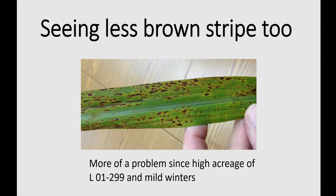Brown stripe is another fungal disease. The lesions are very similar in color to brown rust, but you tend to see more of what we call a halo — a yellow zone around the lesions — and on the underside of the leaf you don't see pustules with spores. There's a variety factor as well. This is becoming more prevalent and obvious, with differences among varieties in susceptibility, and L01-299 is also very susceptible to brown stripe. It's a disease of stressed cane, much more severe when the cane is under nutrient stress, herbicide injury, or adverse weather conditions. When we've had mild winters and the cane is trying to grow earlier than normal with lower fertility and other stresses on it, it has really flared up with brown stripe symptoms.